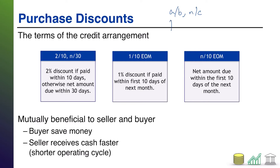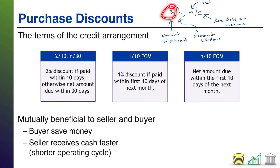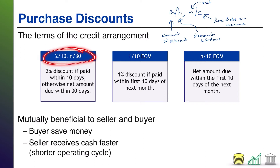What does A slash B, N slash C mean? You're going to get an A discount — that's the amount of discount — if you pay within B days, which we call the discount window. The N stands for net and the C is the due date on balance. So you get an A discount if you pay within B days, but regardless of whether you take that discount or not, the net amount due is due in C days. For example, 2 slash 10 net 30 means you get a 2% discount if you pay within 10 days; otherwise, the net amount is due within 30 days.